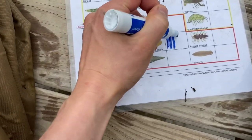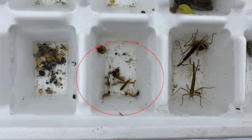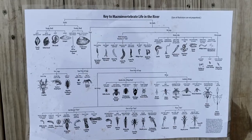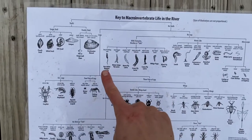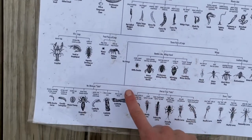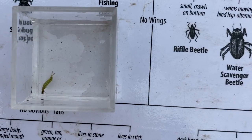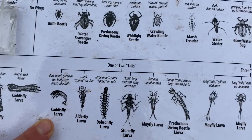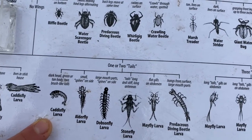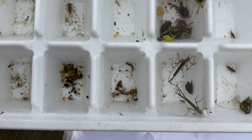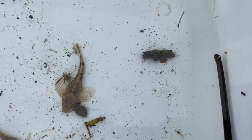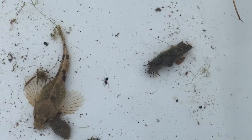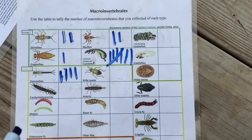I counted eight pouch snails. Then we have these interesting-looking guys: no shell, legs, three pairs, no wings. Do they have tails? He definitely looks like he's got two tails — that is a caddisfly larva: dark head, green to tan body, two brush-like tails. I've got seven of those. And then some of my favorites — case-building caddisflies. There he is walking around with his case — four of those.